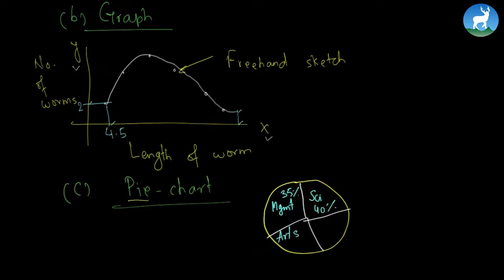Let's say the number of students who want to study management is 35%, so we plot management as 35% here. Let's say the number of students who want to study science is 40%, so we plot 40% here.